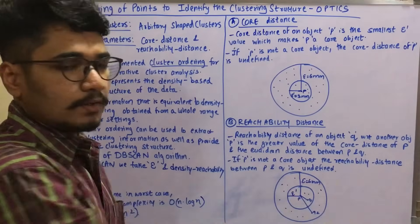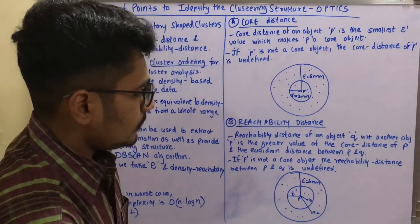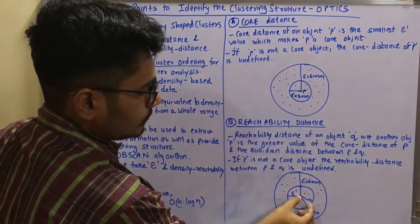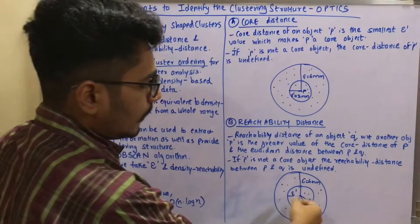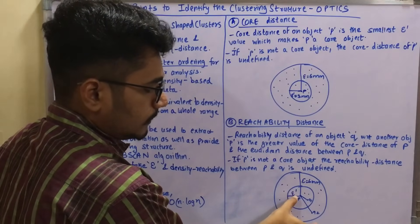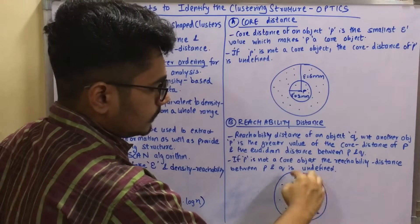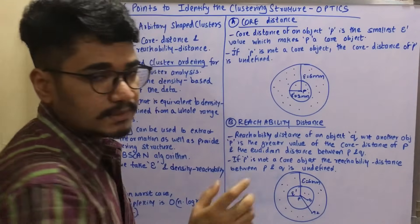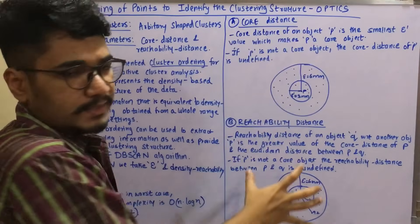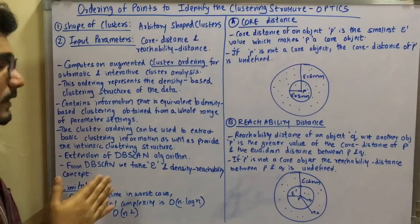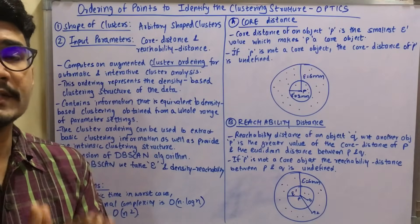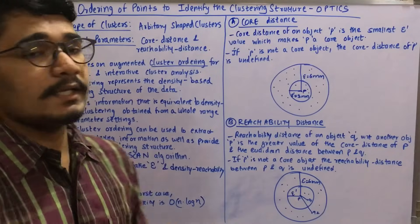In the example with two concentric circles, p is the core object with two data points q1 and q2. Q1 is within the inner radius of 3mm, while q2 is at the outer distance of 6mm. The greater distance — the outer radius of 6mm (epsilon) — is considered the reachability distance. OPTICS revolves around these two concepts: core distance and reachability distance. The time complexity is O(n²) in the worst case and O(n log n) normally.